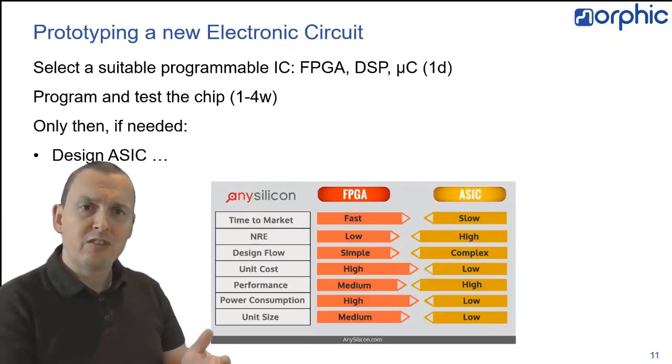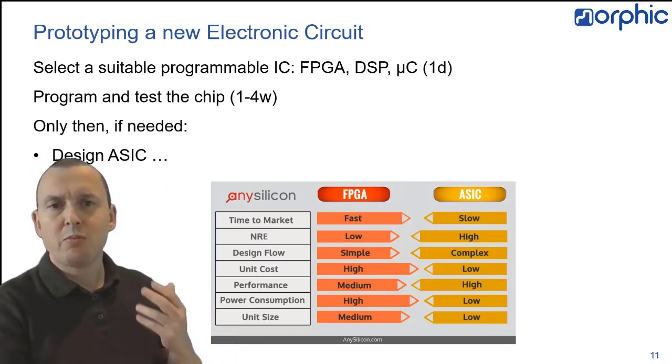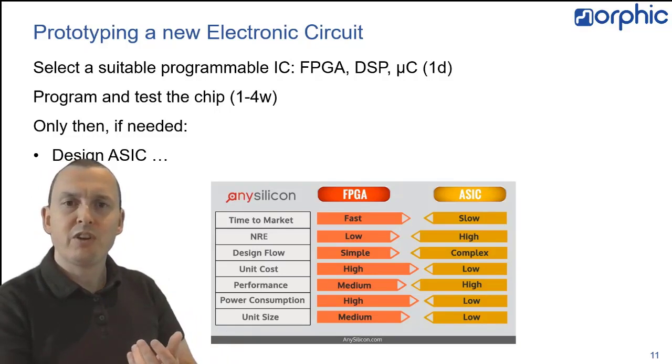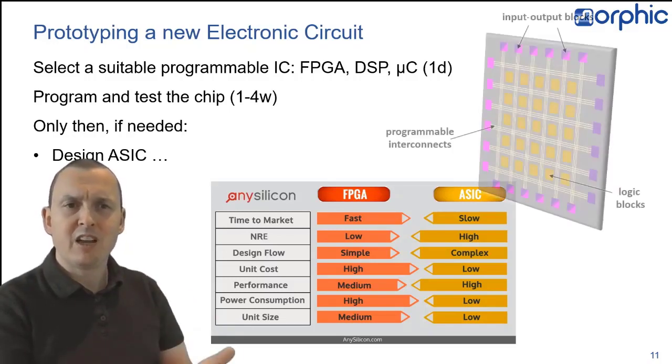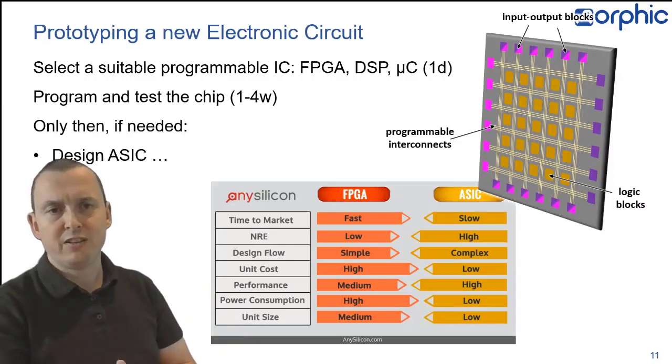In electronics, there's a stark contrast, because if you want to prototype something in electronics, you buy an off-the-shelf electronics chip. You program it, test it, and only if it's needed after a couple of weeks or months, you can decide to design an ASIC. By that time, using, for instance, a field programmable gate array, you can already have tried and tested your value proposition and the key functionalities.